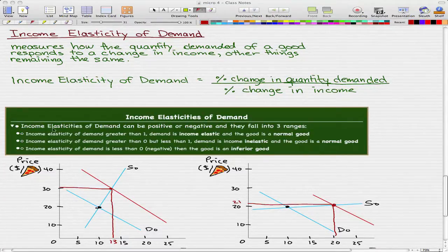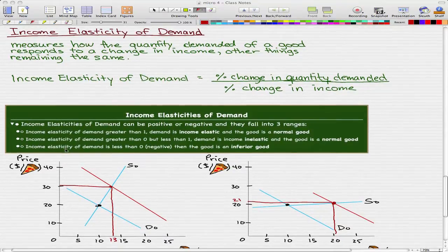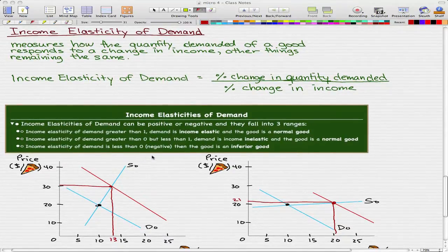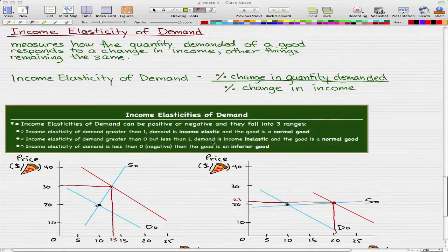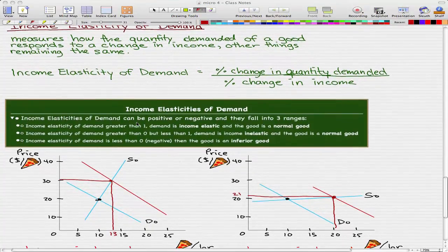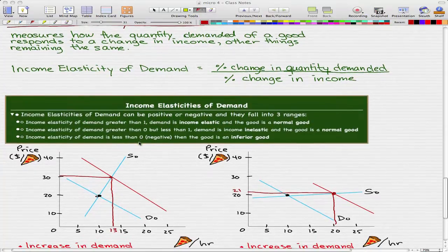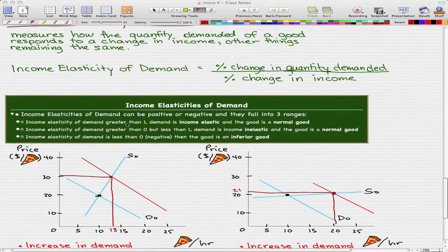Now when the Income Elasticity of Demand is less than 0, that is it is negative, then the good is an inferior good. And we will talk more about inferior good or normal good in a later video but they're pretty intuitive.